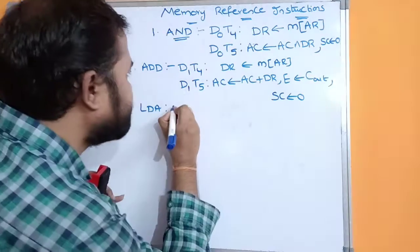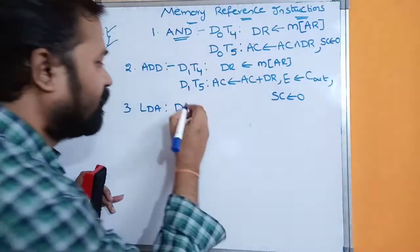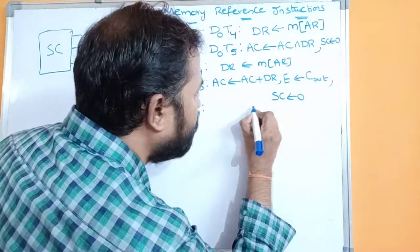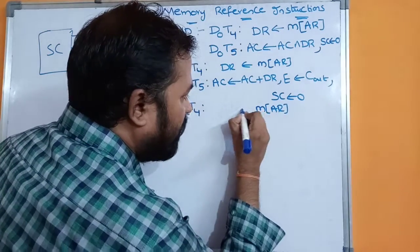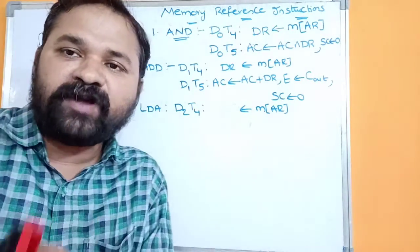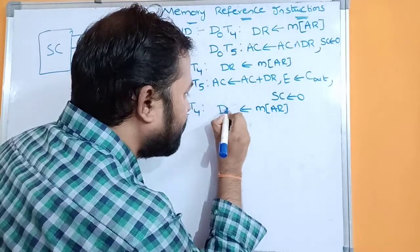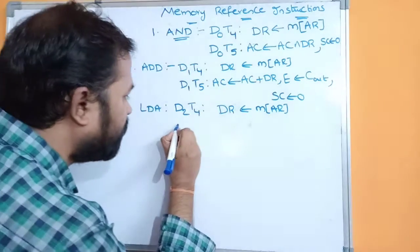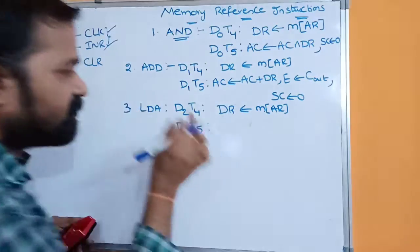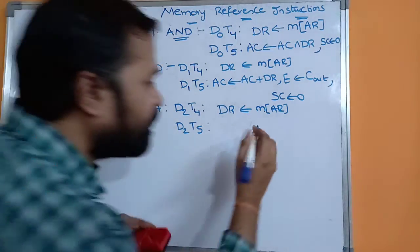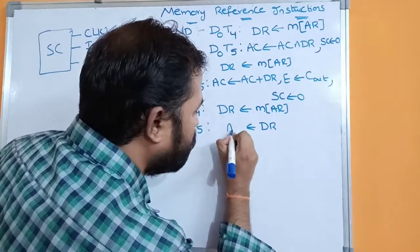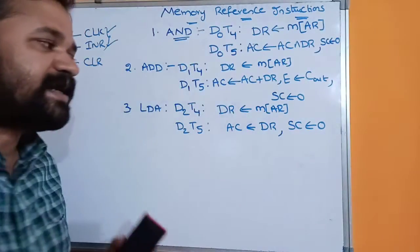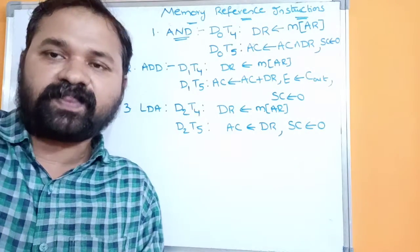LDA is executed when the decoded output D2 is active, and the first timing signal is T4. We have to load the memory operand to the accumulator, but that's not possible directly because there is no connection from the bus to the accumulator. So at T4 the memory operand is transferred to the data register. With clock pulse and increment enabled, the next timing signal becomes D2T5, and the contents of the data register are loaded into the accumulator. Then SC is cleared so the process starts from T0 onwards.